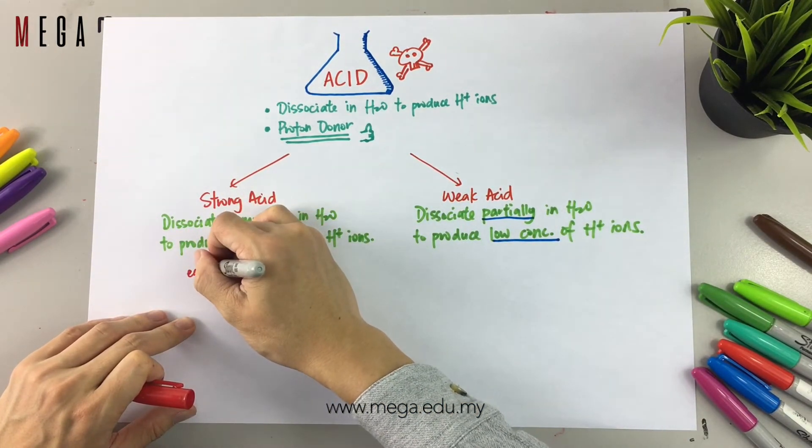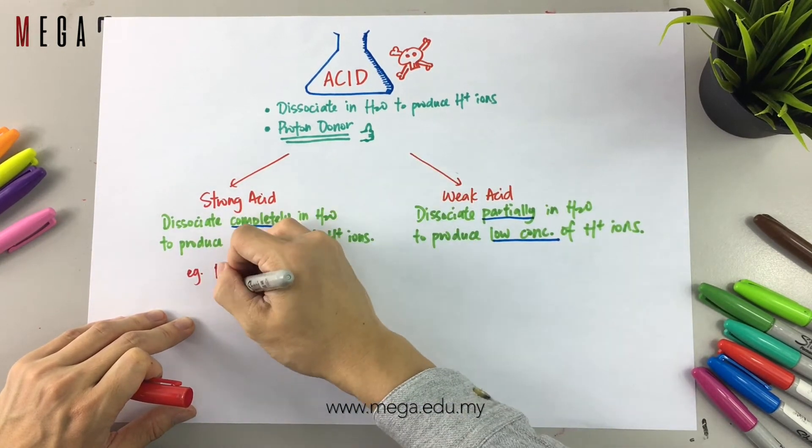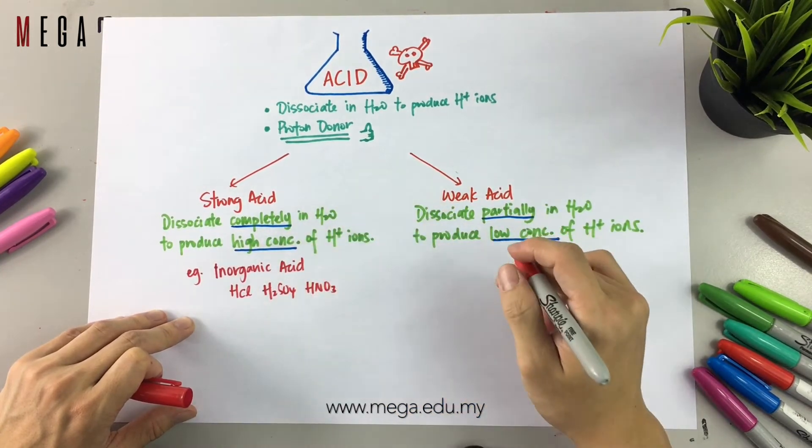Here are the examples. Examples of strong acid are inorganic acids such as hydrochloric acid, sulfuric acid, and nitric acid.